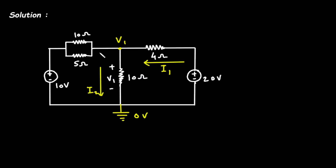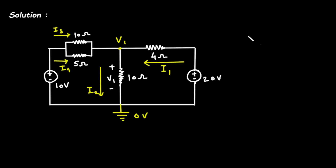Let's label the currents: this current is i1, this current is i2, this current is i3, and this current is i4. Now we will apply KCL at node V1.